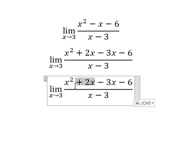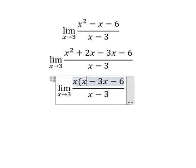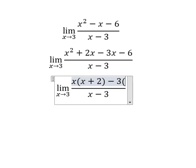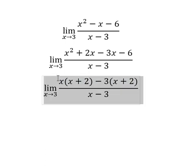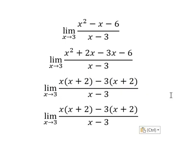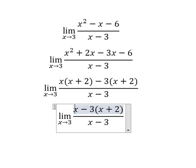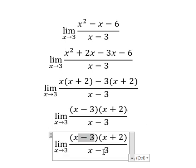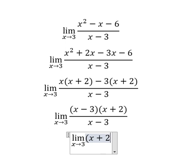Next, we can do factorization by x, and by negative 3. Then we do another factorization by x plus 2. Now we simplify: x minus 3 over x minus 3 cancels out.